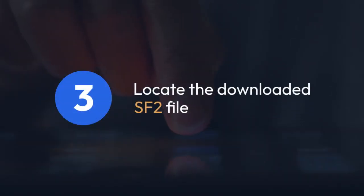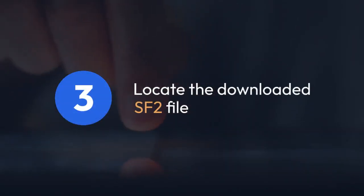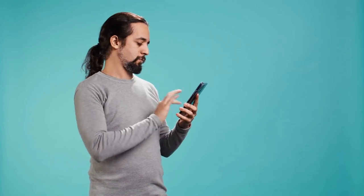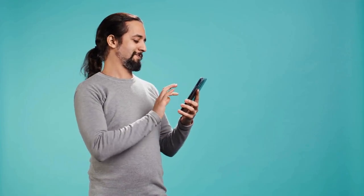Using your file manager, locate the downloaded SF2 file. Then open FL Studio Mobile.